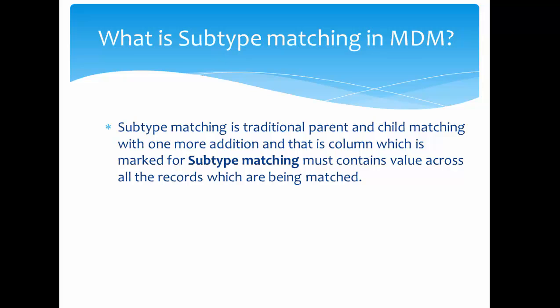If you want to control your matching based on sub-child column values — for example, there are residential address, official address, or any other location address — and if you want to match records based only on residential address, then you have to define the address type as a subtype match column. By defining that, only addresses which reside as a residential address will get matched.